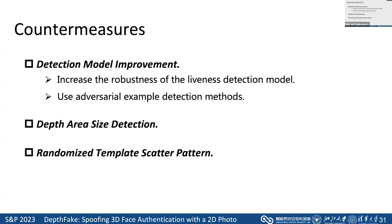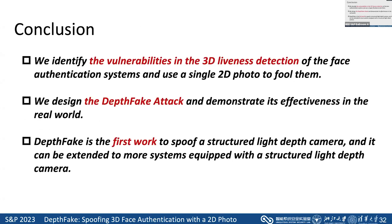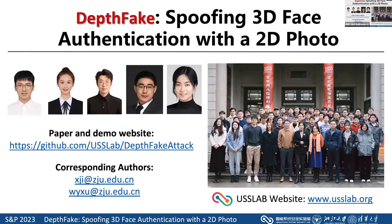To enhance the security of existing systems, we recommend three defense methods. First, we can improve the detection model, such as increasing the robustness of the liveness detection model or using adversarial example detection methods. Another way is to detect the depth area, since commercial infrared projectors usually have a limited projection size. Randomizing the template scatter pattern is also a good defense method which can increase attack difficulty. In summary, we identify the vulnerability in 3D liveness detection of face authentication systems and use a single 2D photo to fool them. DepthFake is the first work to spoof a structured-light depth camera, and can be extended to more systems equipped with such cameras.